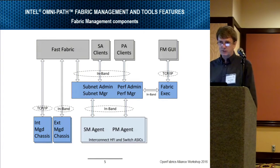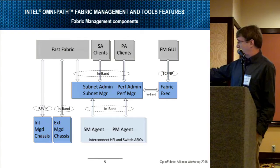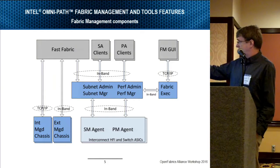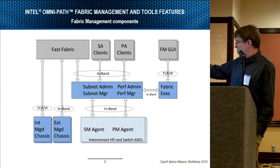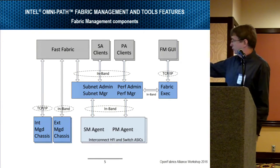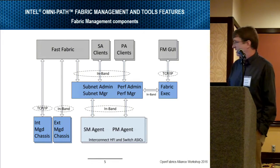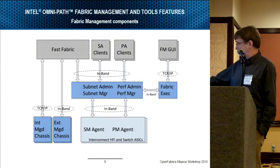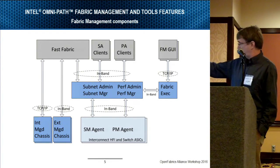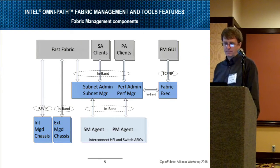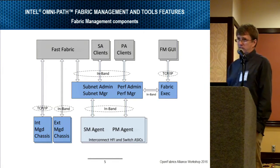At the core of the fabric manager there's a subnet manager as well as a performance manager, with corresponding admins. SA clients — subnet administration clients — can make queries in-band to retrieve fabric information. There's also an independent performance manager so that through PA clients you can get the same kind of view of the fabric. At the lower level where the interconnected host fabric interfaces and switches are, that's where the management agents run: a subnet management agent and a separate performance management agent, used by both the SM and the PM to comprise their views of the fabric.